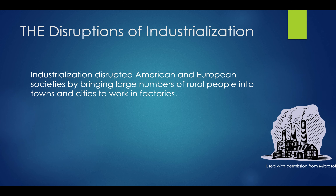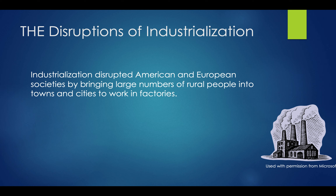Industrialization disrupted both American and European societies by bringing large numbers of rural people into towns and cities to work in factories. This disrupted the family system as a whole — it broke up families. It was often young adults who moved to the cities, leaving grandparents at home in the countryside to raise children. Part of what fueled even the scientific revolution during the Age of Enlightenment was that family sizes were bigger than what inheritance needs were able to cope with.